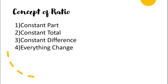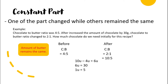Today we will talk about the concept of ratio. We learned last week what a ratio is and how to reduce it. Today we are going to learn about four concepts of ratio: constant part, constant total, constant difference, and everything change. It is important to identify which concept to use because if you can identify the right concept, you can easily solve the question.